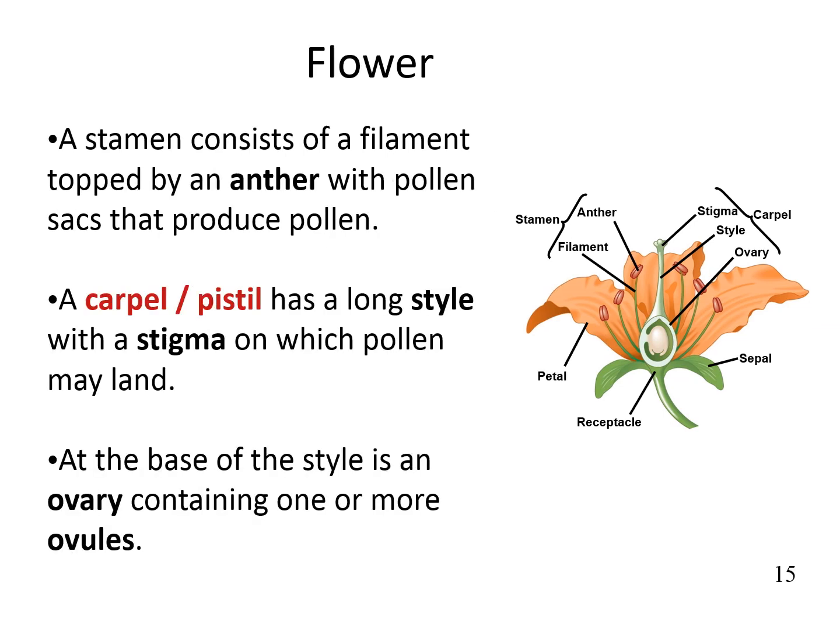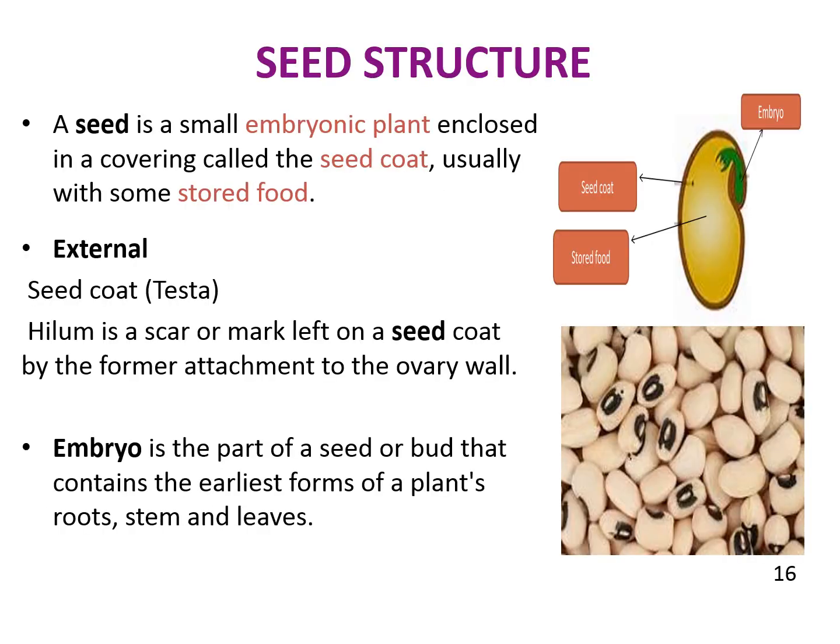The stamen consists of a filament topped by an anther with pollen sacs that produce pollen. A carpel or pistil has a long style with a stigma on which pollen may land. At the base of the style is an ovary containing one or more ovules.